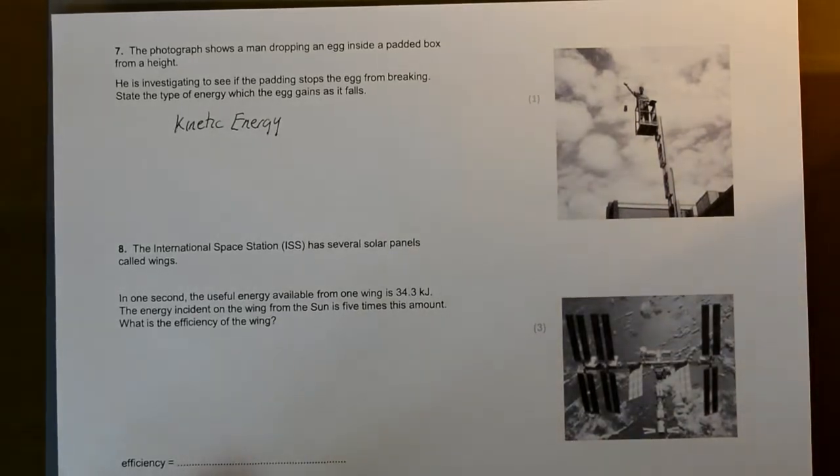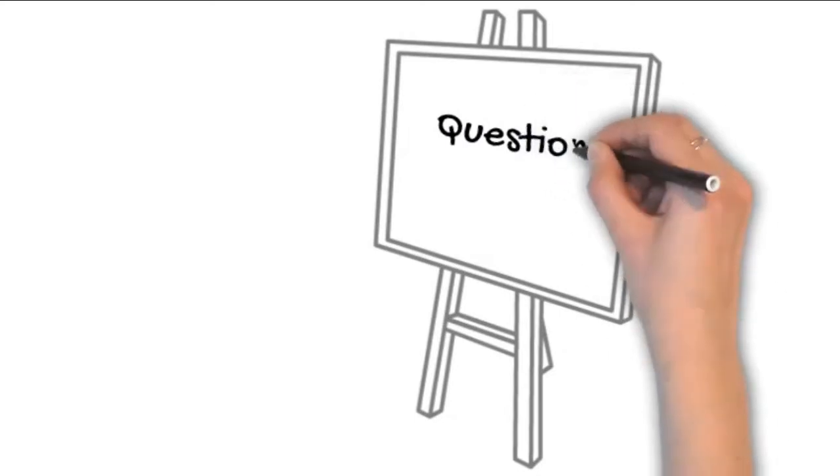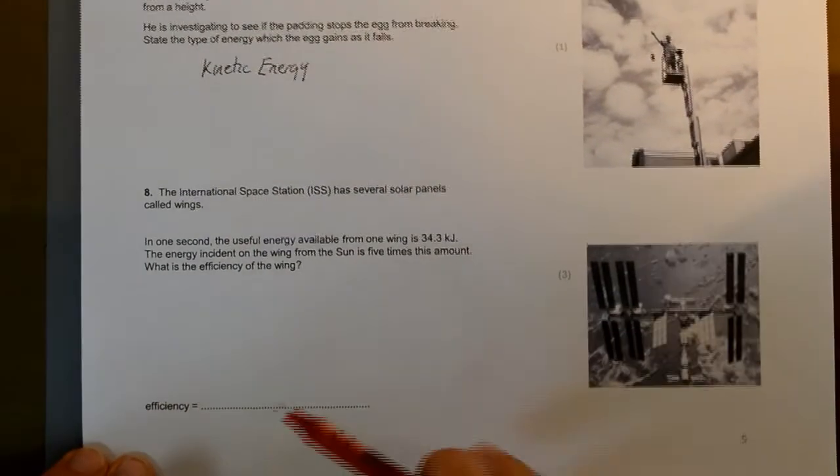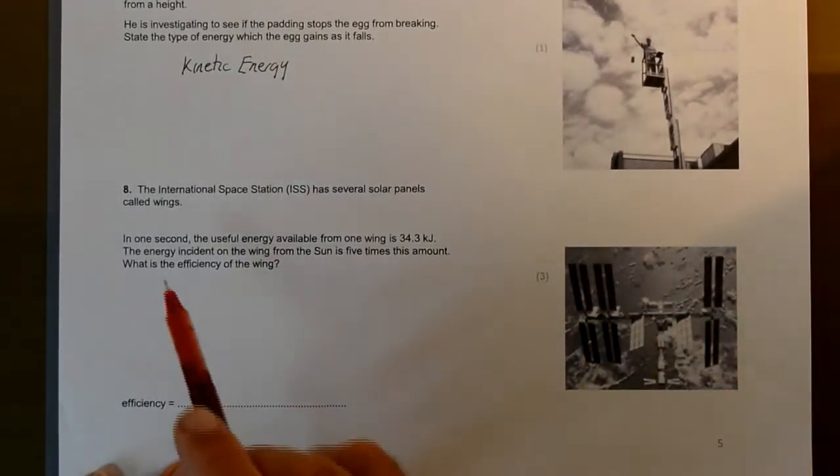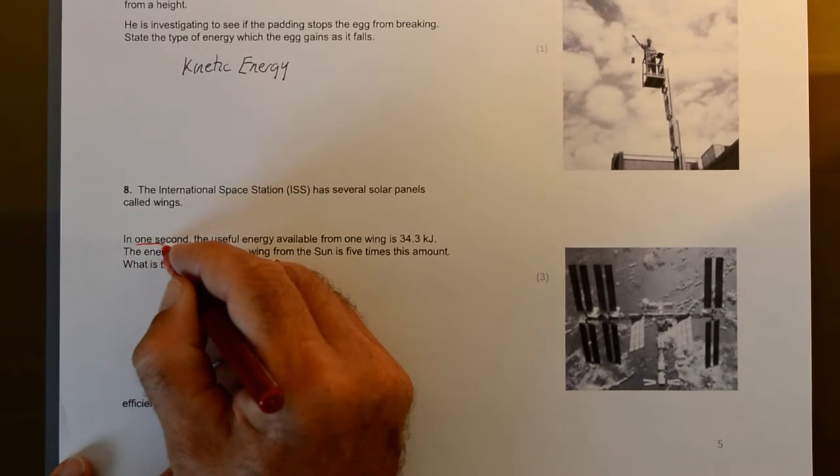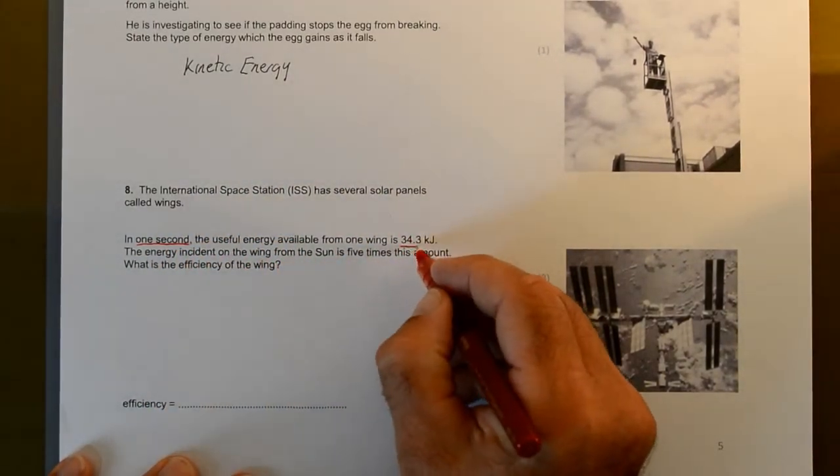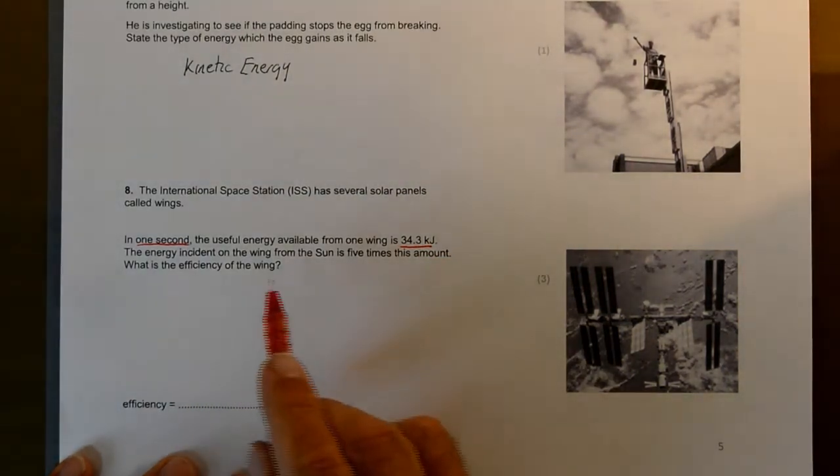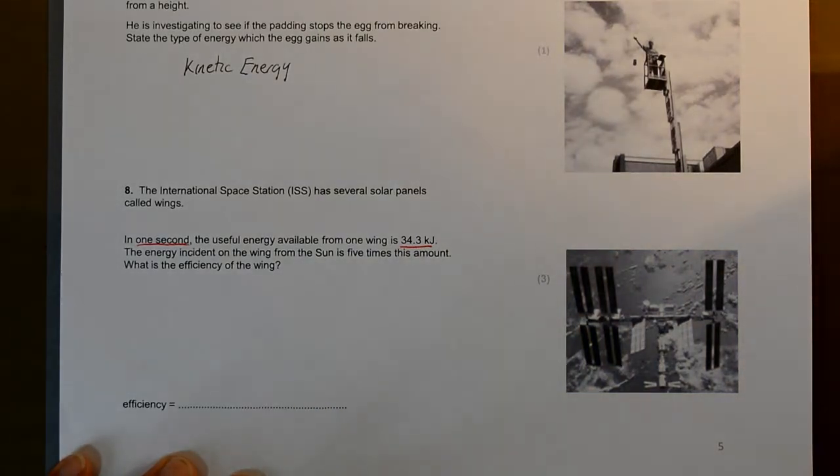Question 8: The International Space Station has several solar panels called wings. In one second, the useful energy is 34.3 kilojoules. The energy incident is five times the amount. What is the efficiency?